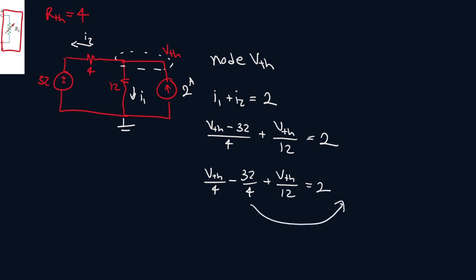Bring this to the other side. So 2 plus 32 divided by 4. That's 10.